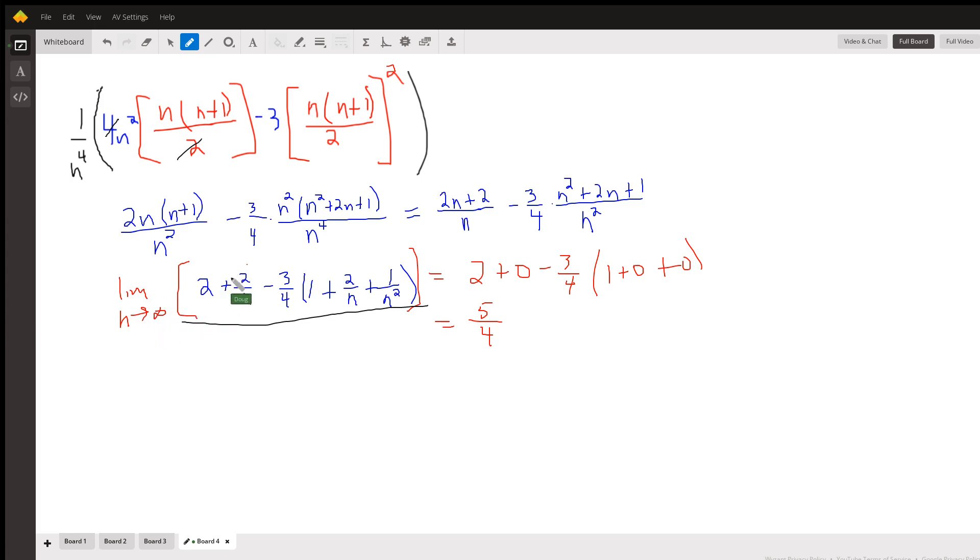The point is that all these fractions with n in the denominator approach zero. So we get 2 plus 0 minus 3/4 times 1. 2 minus 3/4 is 5/4. That is the actual area under the curve. There you go, hope that helped. If you have any questions, post a comment.